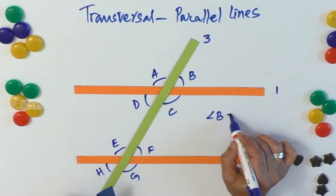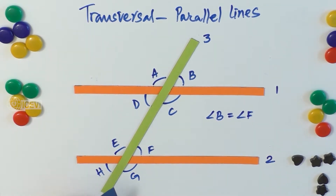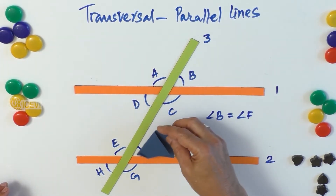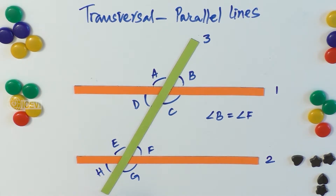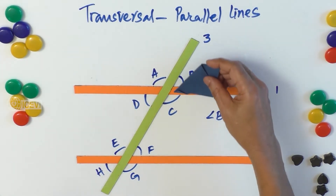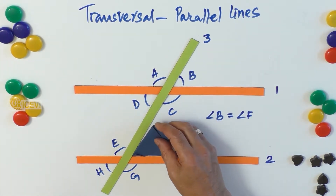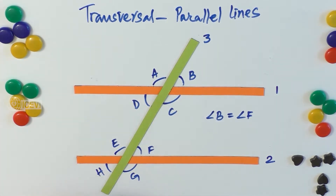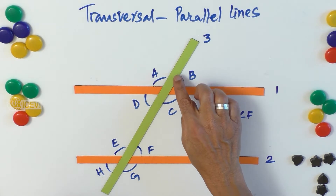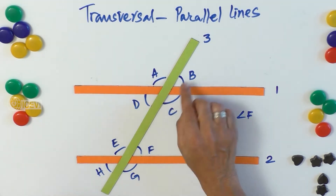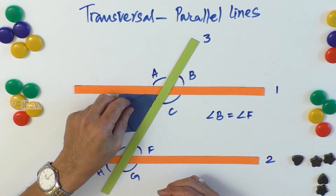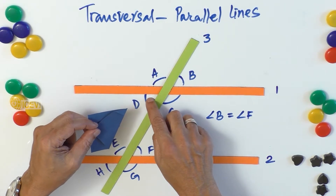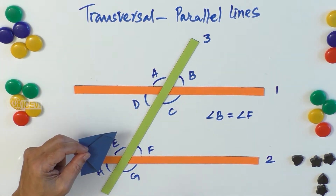We are measuring angle B. Since B and F are corresponding angles, we find that angle B equals angle F. Now, the vertically opposite angles are also equal. B and F are equal because they are corresponding angles — they are both on the right side of the transversal. Whether parallel or not, vertically opposite angles are equal.